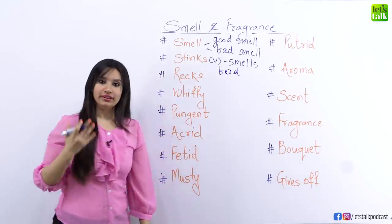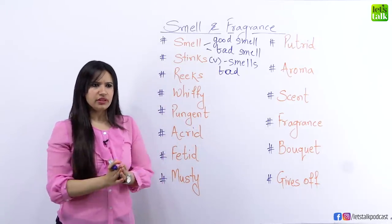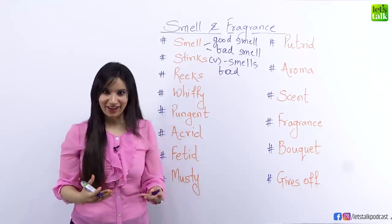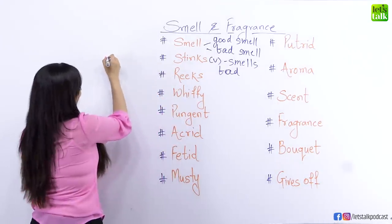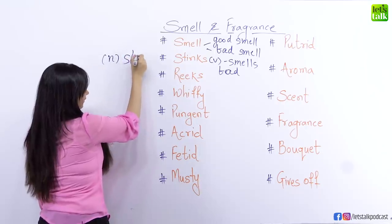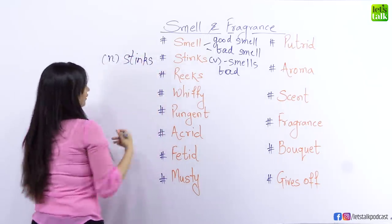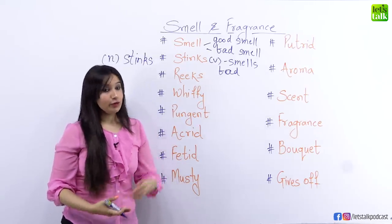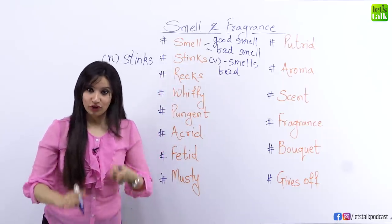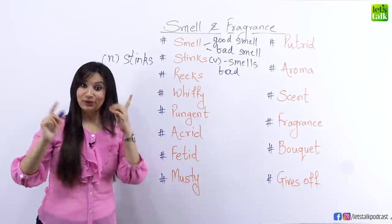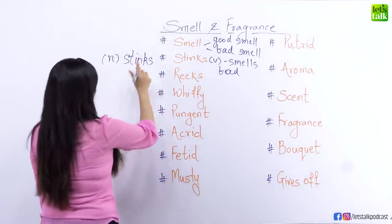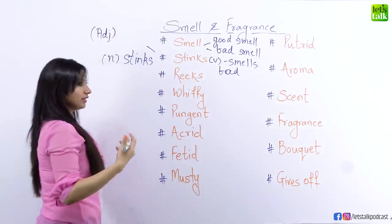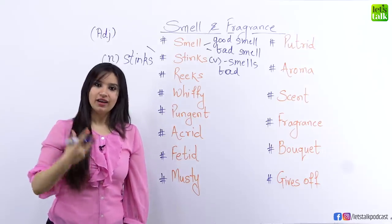We can also use the word 'stink' as a noun by saying there's a real stink coming from the wash basin — that's where you're using 'stink' as a noun. But when you use it as a noun, there will be no S: there's a real stink coming out of the wash basin. We can also use 'stink' as an adjective — not just a verb, not just a noun. When something is very stinky, that's how the word becomes an adjective.